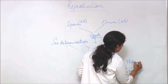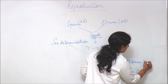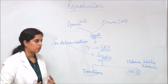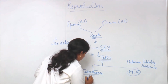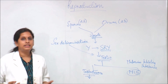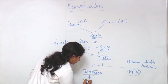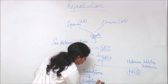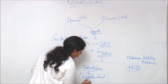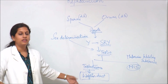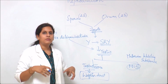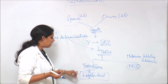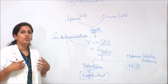The other substance produced by the testis is the Mullerian inhibiting substance, or MIS. Testosterone actually helps in the development of the Wolffian duct. These two ducts — the Wolffian duct and the Mullerian duct — are important to remember. Testosterone helps in the proliferation of the Wolffian duct, which ultimately helps in the development of male reproductive structures.